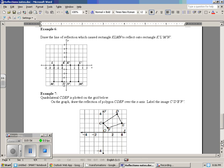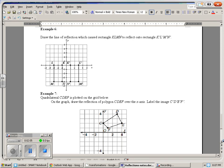Example 6. Draw the line of reflection which caused triangle KLMN to reflect onto rectangle KLMN prime. Go ahead and do that yourself. It's reflected over the y-axis. So we have the pre-image and the image.